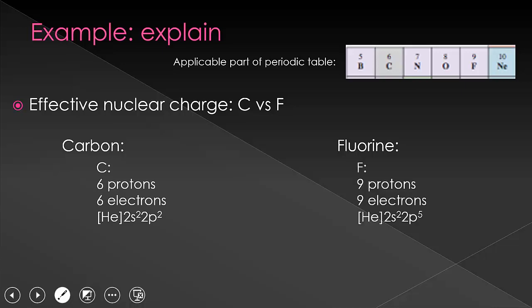Meanwhile, fluorine has nine protons and nine electrons, giving it a valence electron configuration of 2s2, 2p5. These have the exact same number of energy shells. They both go up to the n equals 2 level. So they have the exact same amount of shielding. However, fluorine has many more protons in its nuclei. And so therefore, it's able to pull those electrons in much tighter, giving it a much higher effective nuclear charge.